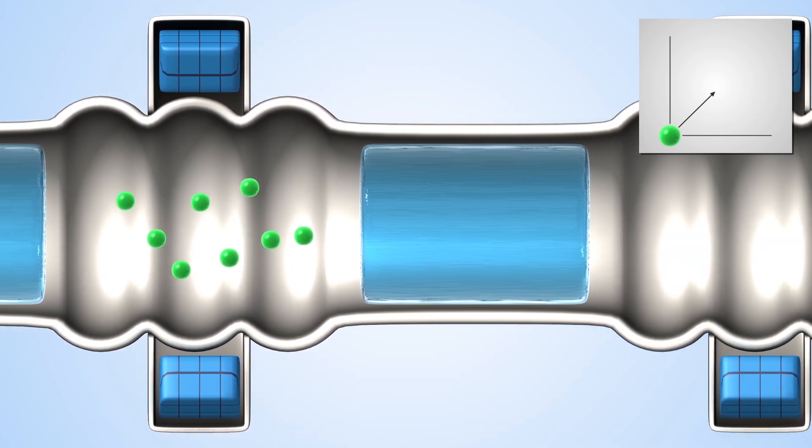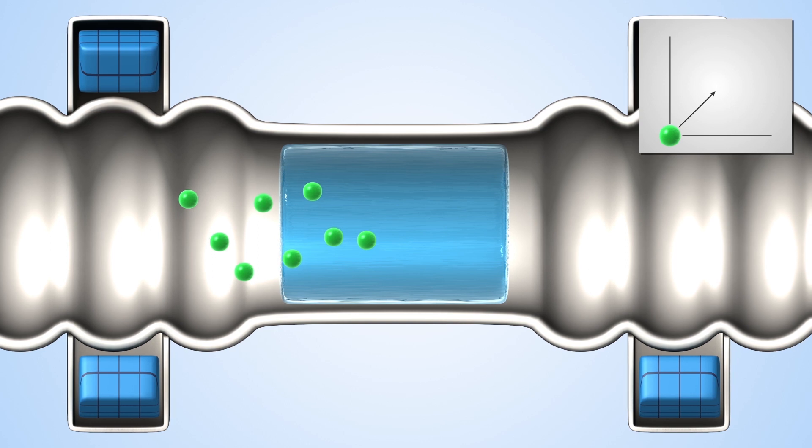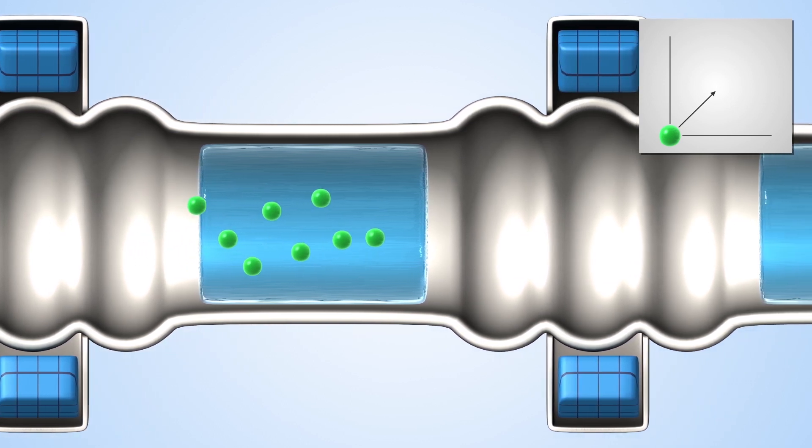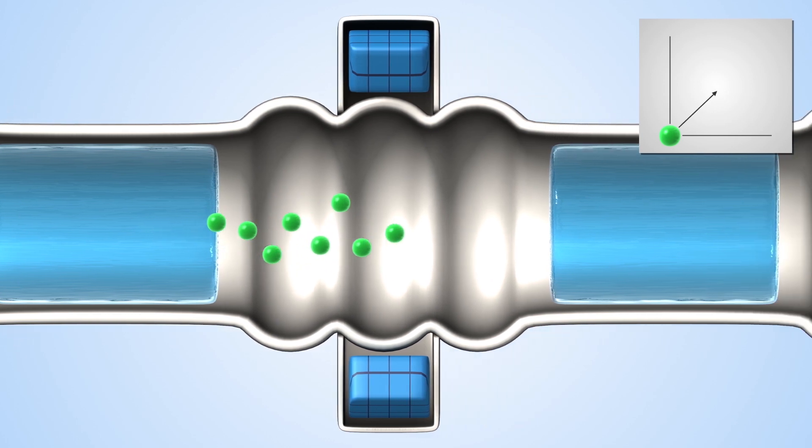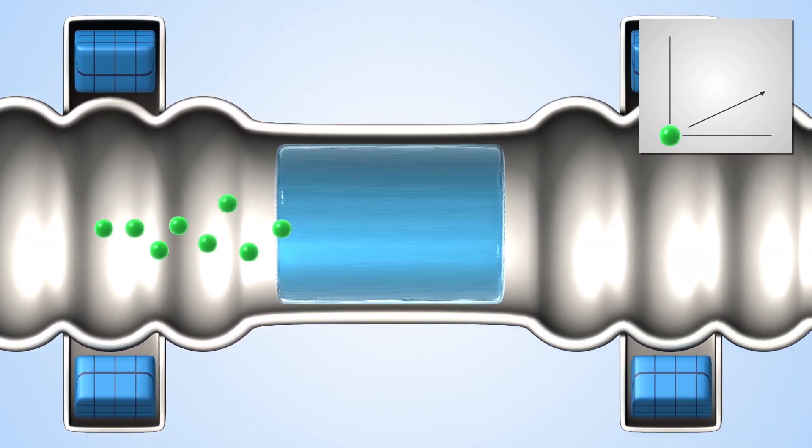Finally, the particles pass through an electromagnetic chamber called a radio frequency cavity, which returns their lost energy, but with one difference. It only accelerates them in the direction of the beam.